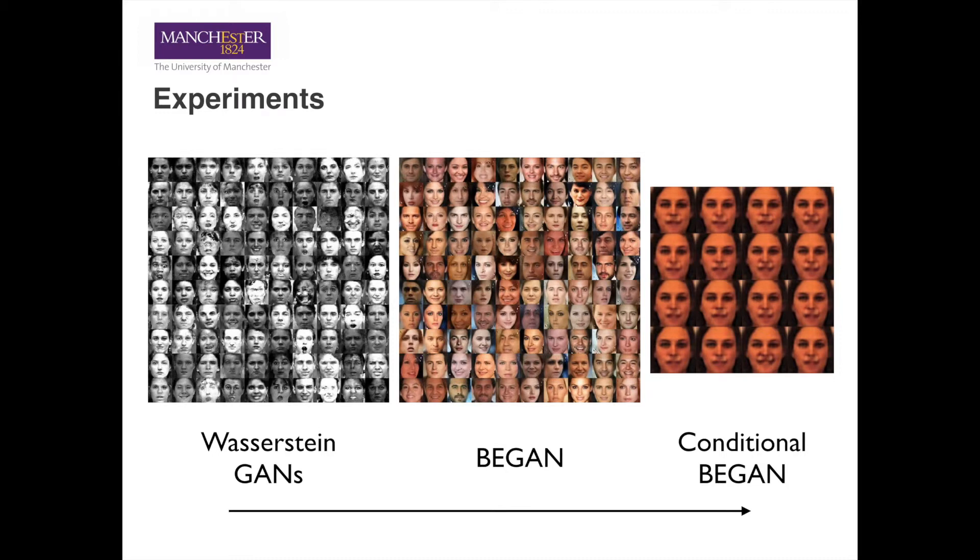To improve the quality of the image, the model further adapts the architectures from BEGANs, which results in high-quality sharp faces. Then, the model was changed to generate faces from faces with conditions, but it collapsed again.